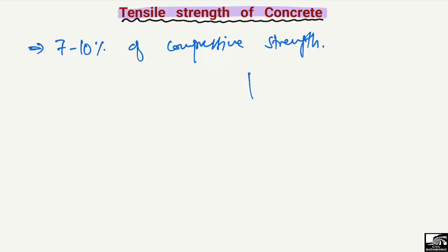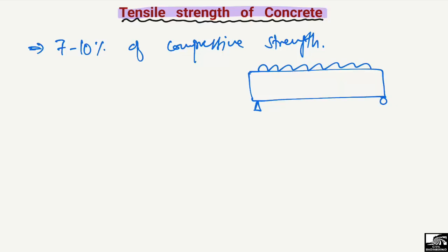Due to this fact, consider a simply supported beam as an example. When a load acts on the beam, the top is in compression and the bottom is in tension, because a beam is a bending member and is subjected to both compressive and tensile stresses.